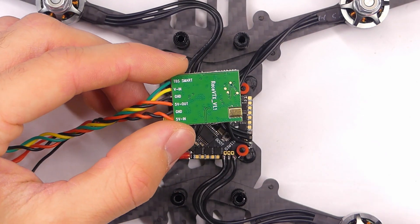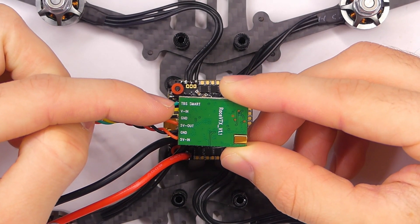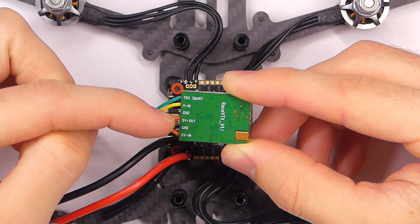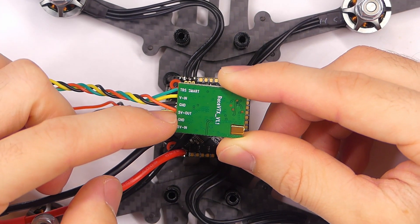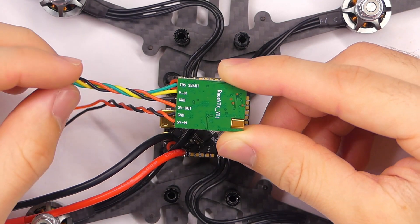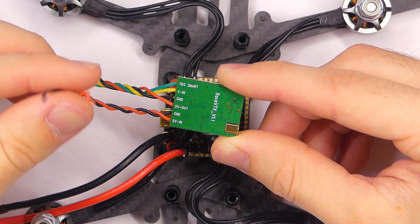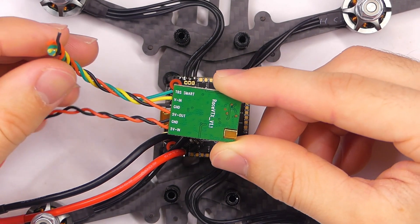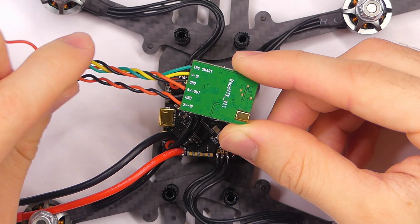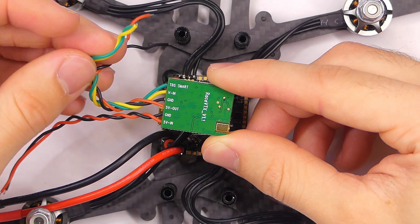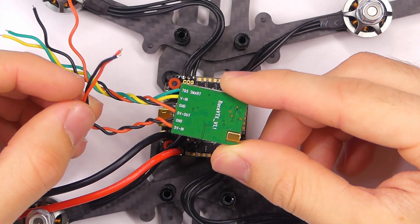So on our video transmitter here, we can see that it says TBS smart audio, video in, ground, five volt out, ground and five volt in. I don't know if we could use the five volt out to power this board, but since it's labeled in and out, we will just use the ground and five volt in. And then we will use the TBS smart audio and the video in, the yellow and green wires, and then the black and red for the power.